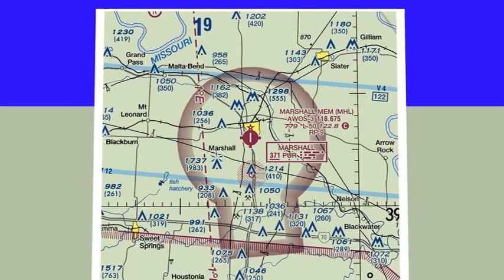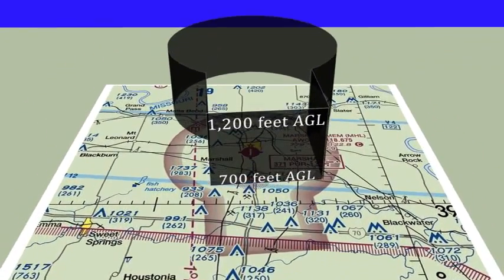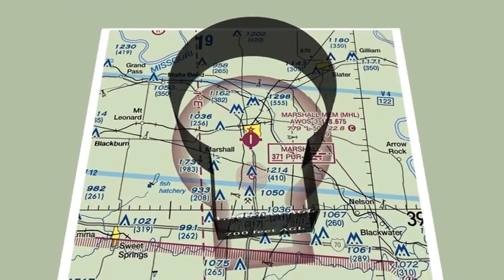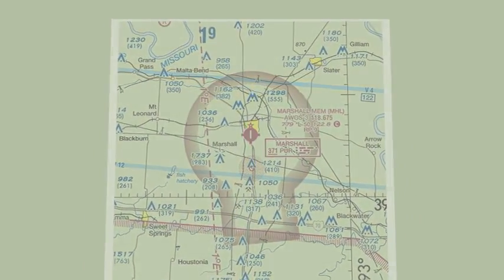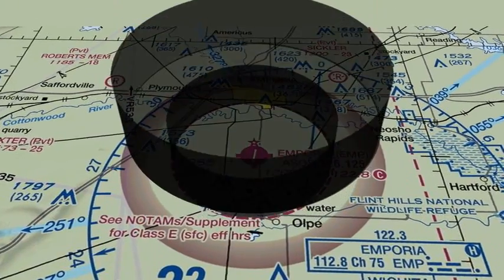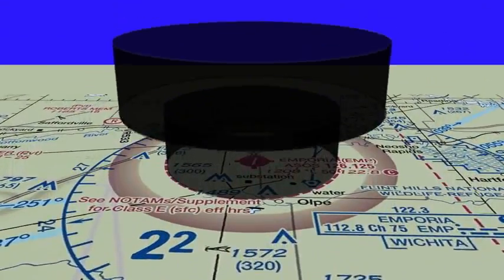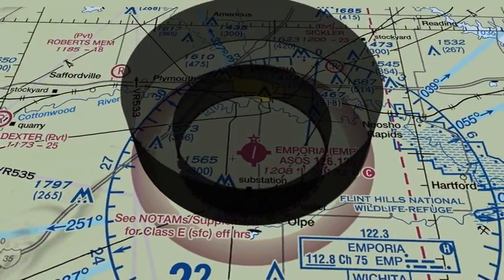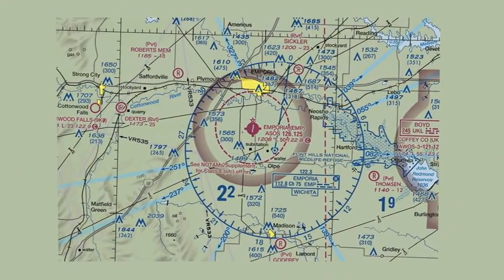In order to protect instrument traffic conducting approaches in marginal weather conditions, Class E airspace is often further extended down to 700 feet AGL or even all the way to the surface. These 700 feet AGL or surface areas are usually customized to encompass portions of specific instrument approaches at an airport and are depicted on aeronautical charts.